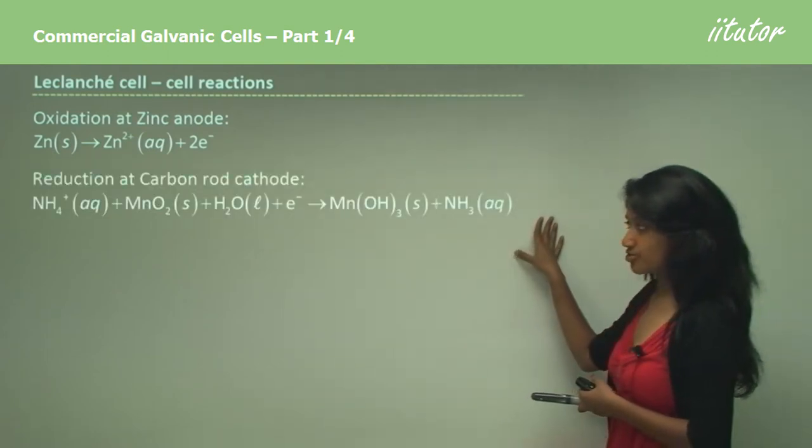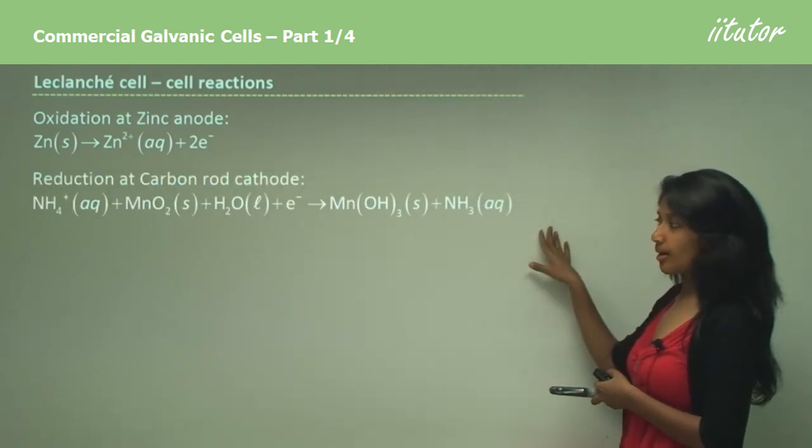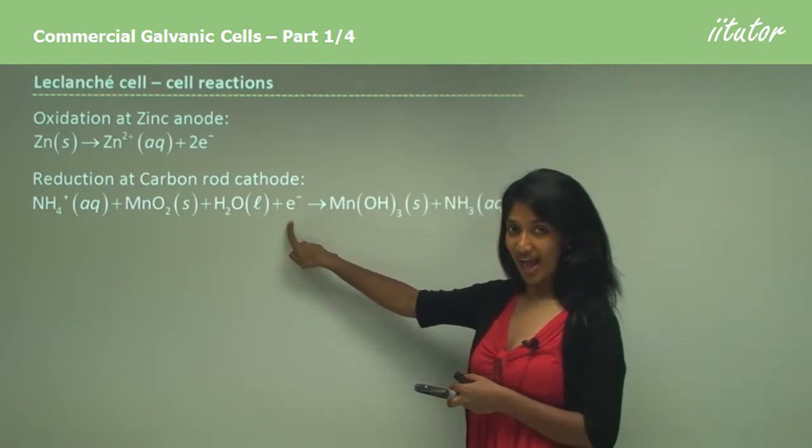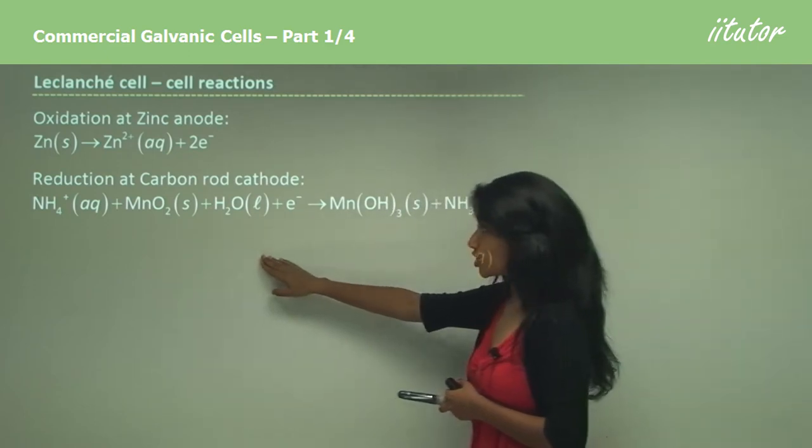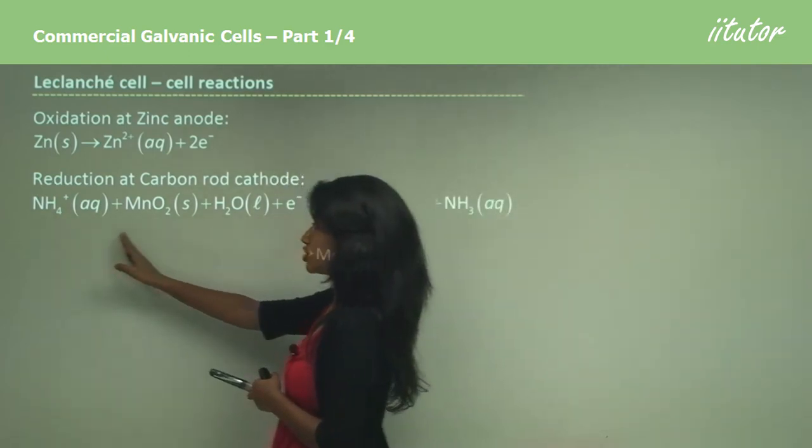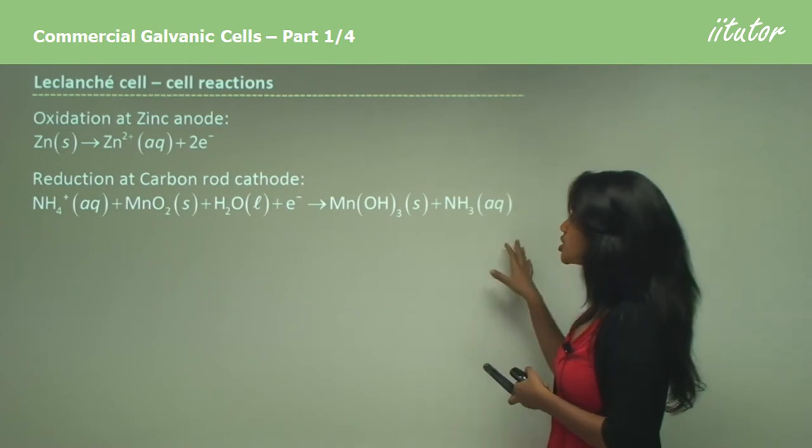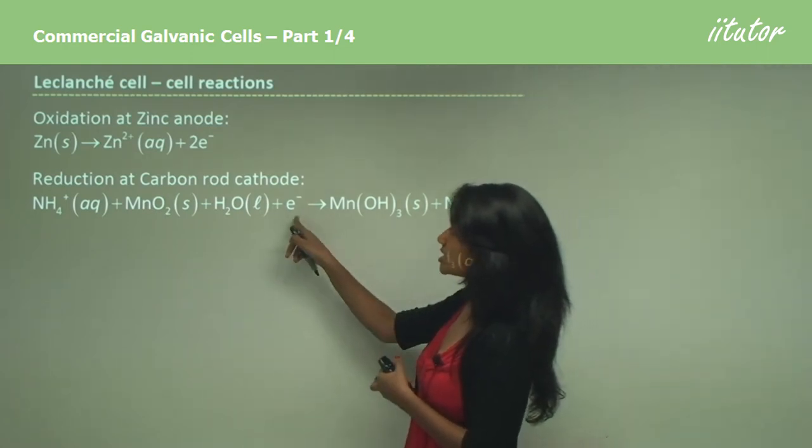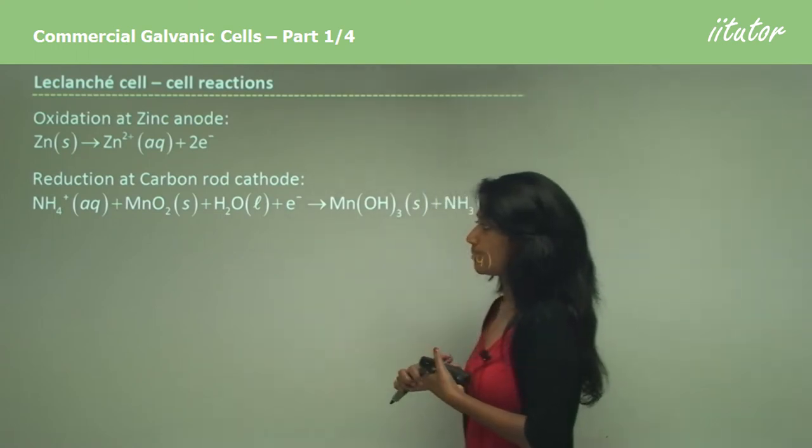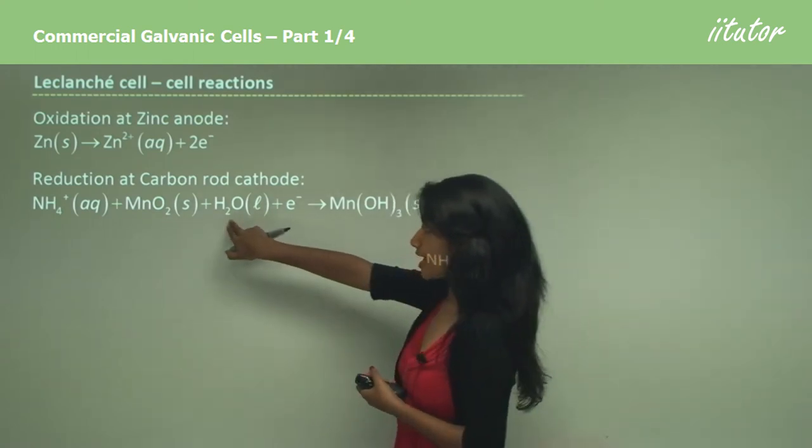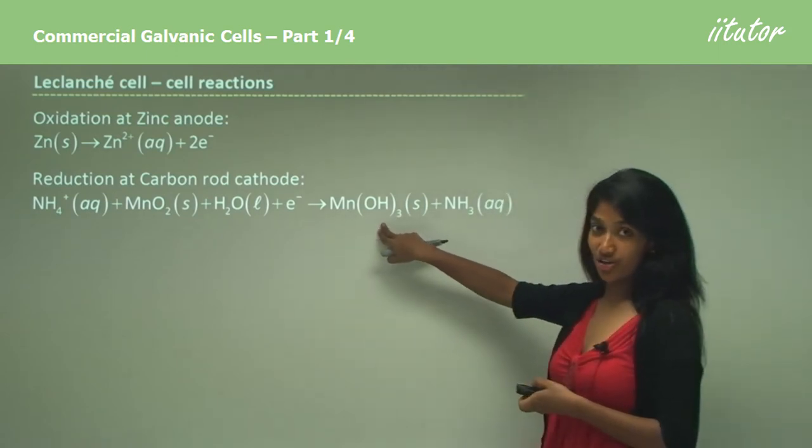And also we have a reduction reaction. Yes, it does look a bit complicated, but it's simple. Again, we have the electron being added, so the gaining of the electron to this species which is being reduced. And here we have the final product. So to be exact, this electron really goes into this ammonium ion to form ammonia. But these displace to form manganese hydroxide.